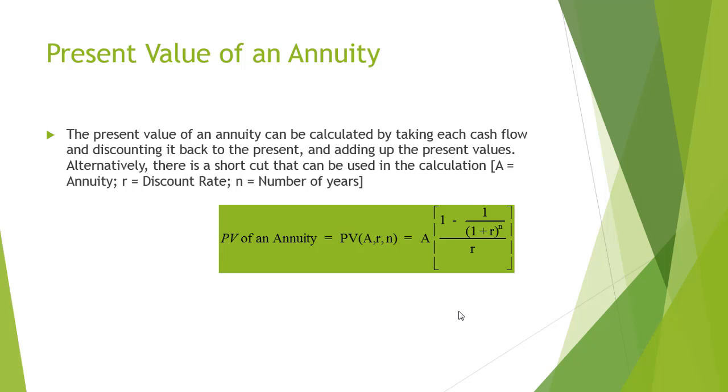The present value of an annuity can be calculated by taking each cash flow and discounting it back to the present and adding up the present values. Alternatively, there is a shortcut that can be used in the calculation where A is annuity, R is discount rate, and N is representing number of years in the shown formula.